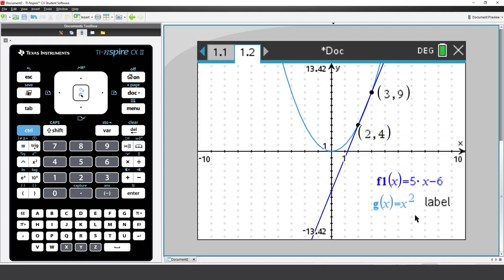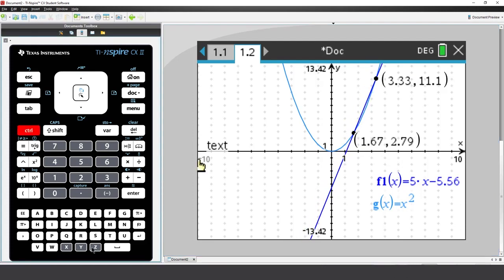I can even move the graphs, and the Points of Intersection will automatically update. To put the graphs back to their previous definitions, Control Z or Control Escape, that's our undo.